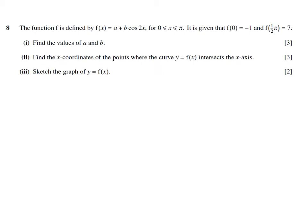Starting with f(x) = a + b·cos(2x). When x equals 0, substituting gives a + b·cos(2×0) = negative 1. Since cos(0) = 1, this simplifies to a + b = negative 1. This is our first equation.